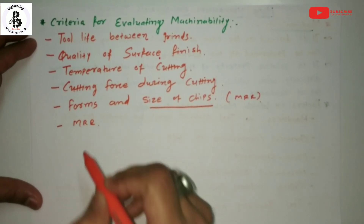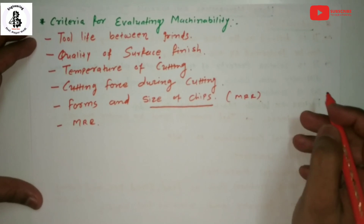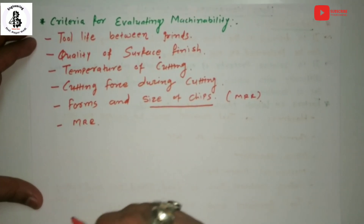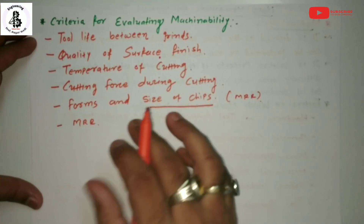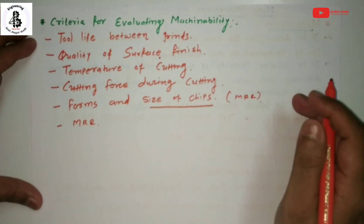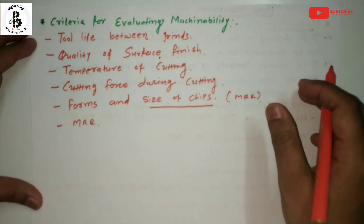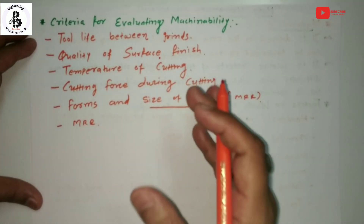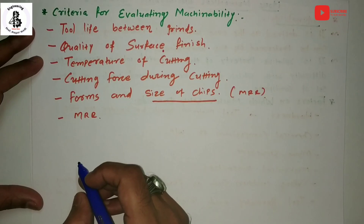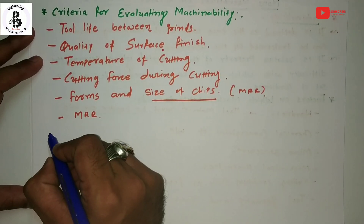Metal removal rate is the main criterion for evaluating machinability. How much time is required to remove a given volume of material is one criterion for evaluating machinability.